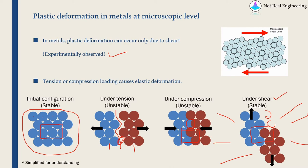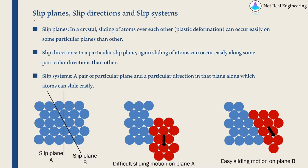This permanent deformation or sliding of atoms is not possible on all planes or in all directions. There are some specific planes along which atoms can slide over each other — those planes are called slip planes. And within a particular slip plane, there are only some directions along which atoms can slide — those are called slip directions. For example, in a 2D representation (imagine it as 3D), atoms sliding across slip plane A give one configuration, while sliding across slip plane B gives another.